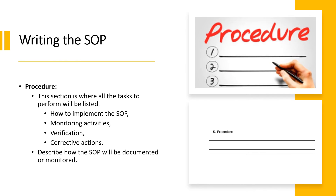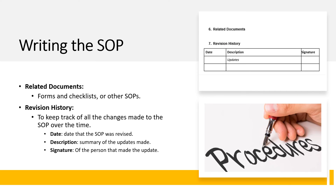If possible, make it visual — add bullet points and images to catch the reader's attention and make it easy to digest. Use flow charts, diagrams, or computer screenshots to help break up long sections of text and create a better user experience for the reader. Related documents — here you will list related supporting documents such as forms and checklists or other SOPs. For example, if this is a cleaning procedure, you can make reference to the approved chemicals list and to the cleaning verification checklist.